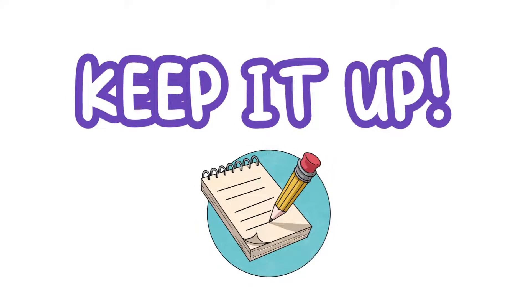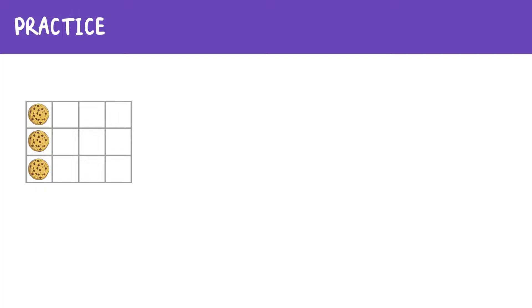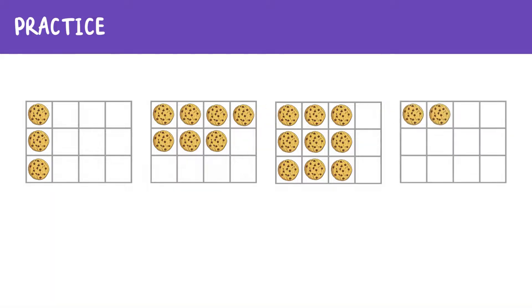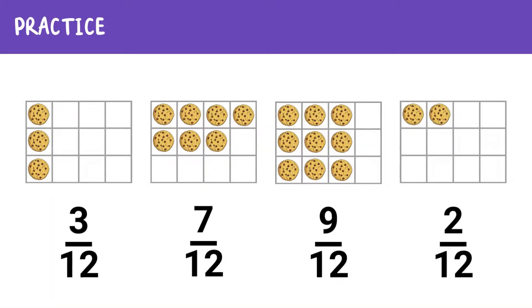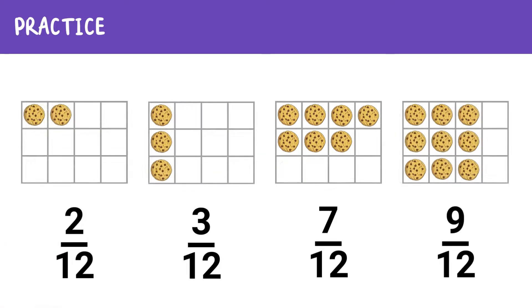Let's try another one — time for a sweet challenge. Here are 4 trays of cookies, each with a fraction of the cookies left: 3 twelfths, 7 twelfths, 9 twelfths, and 2 twelfths. Can you order them from smallest to largest? The correct order is 2 twelfths, 3 twelfths, 7 twelfths, and 9 twelfths.